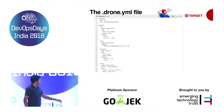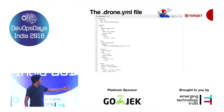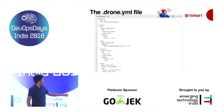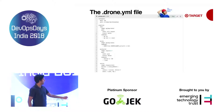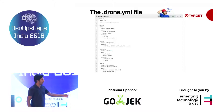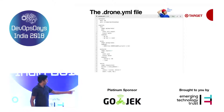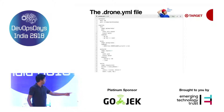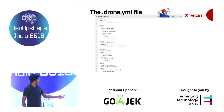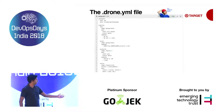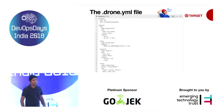Whenever a developer raises a pull request, the Drone test step gets executed. Since there's no constraint in the build step, it executes for all events — push, tag, or pull request. In post-build, I've added a constraint for event push on branch master, so it executes the binary. For notification, there's a Drone Slack plugin that notifies your Slack handle on success or failure status.